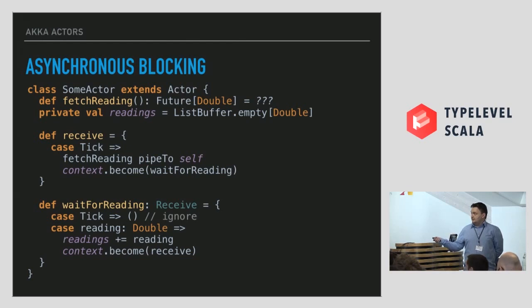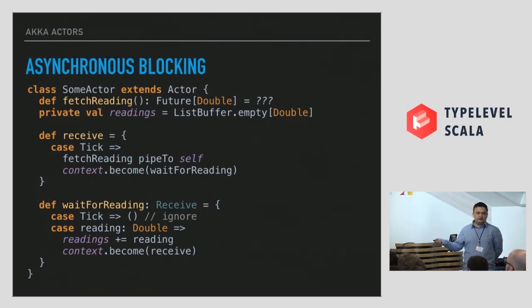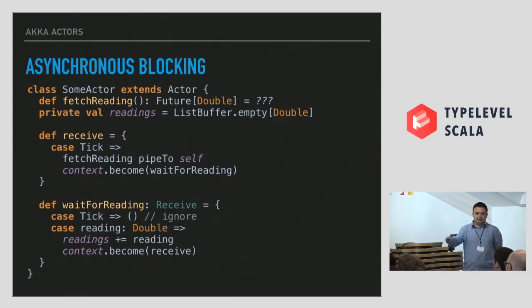Instead of doing that — and also instead of blocking on the results of futures from inside the actors — what you usually should do is model a state machine. In this example, we initiate a future whose result is going to be piped to our actor when finished. Then we evolve into a state that waits for that response. In this state we can ignore further ticks or other messages, and then we go back to receive when the future is done. This is the usual way to work with actors — this is how people would do it in Erlang.